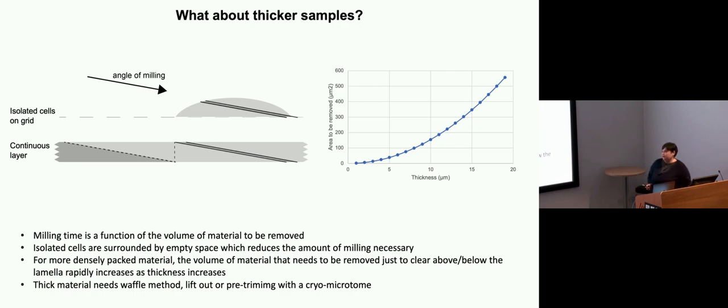We do this milling at very low angles. If you have this cell sitting on your quantifoil here to mill a lamella here, it's not a huge amount of material to be removed. It's just the material below and above. But already when you go from an isolated cell to a continuous layer, even with the same thickness, to make a lamella in the same place, you actually have to remove all of this material to clear this area, to be able to fully clear the area under the lamella.